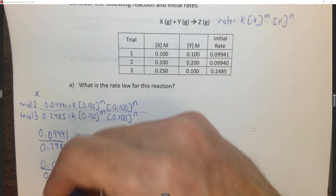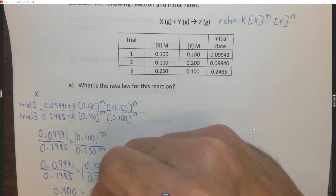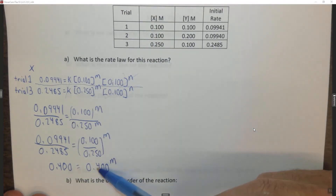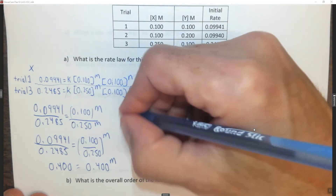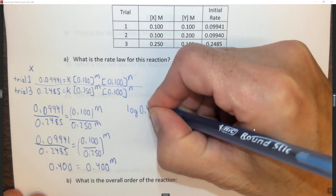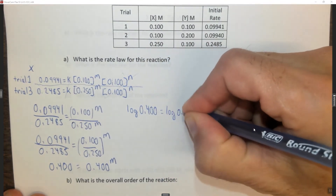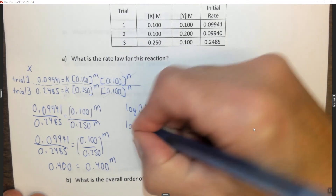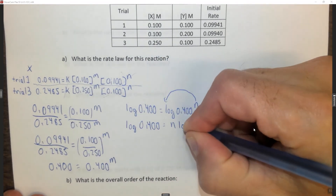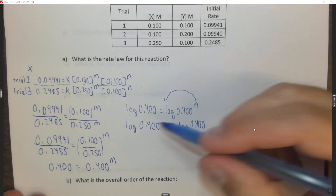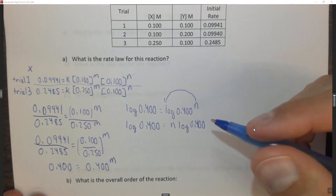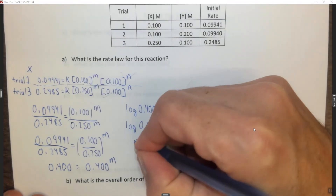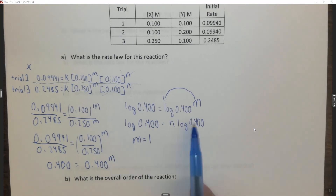Doing the math, we get 0.400 = (0.400)^M. To solve formally, take the log of both sides: log(0.400) = M × log(0.400). Dividing both sides by log(0.400) isolates M. But in this case the two sides are the same number, so M must equal 1. You can also just use your calculator to take the logarithms.